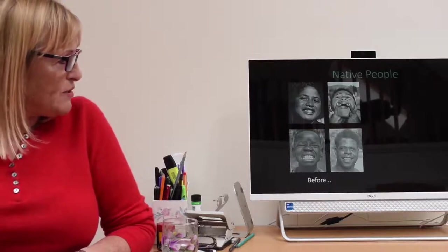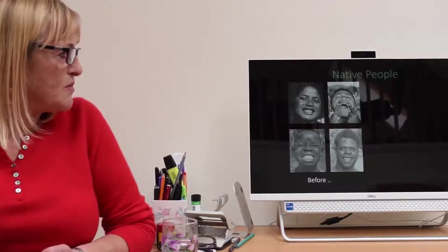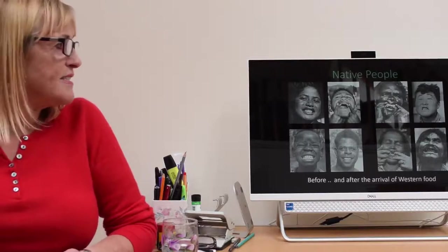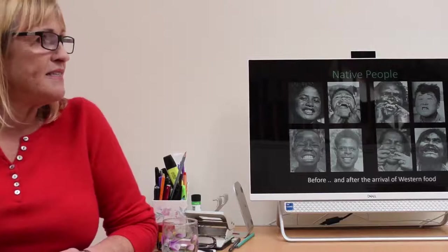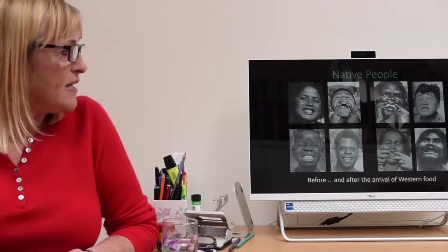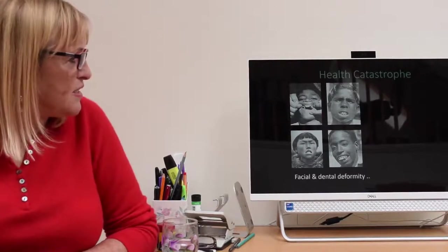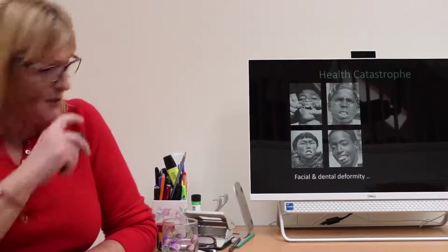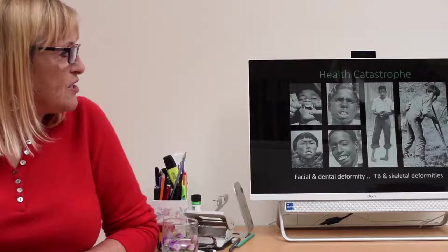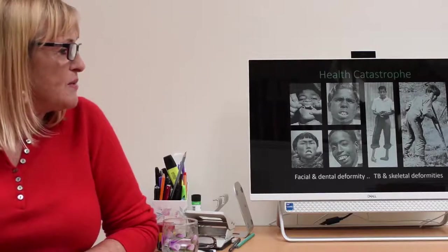These are the before pictures. What he found was lovely symmetrical faces, nice broad arches, no tooth decay, no gum disease. Yet these people didn't have toothbrushes, didn't have dentists, didn't brush their teeth. They were often covered in plaque, but they didn't get disease. Then the supply boats came in, shops were set up on the islands, and in the space of a few years their health was completely devastated. You can see the dental health just went down. It was a dental catastrophe, but it was a health catastrophe too. There was quite a lot of deformity, and many children developed skeletal deformities and TB.